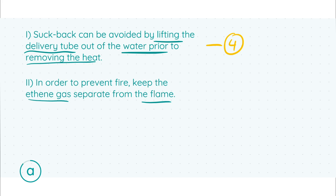For Part ii — avoiding fire — the answer is to keep the ethane gas separate from the flame, since ethane is quite flammable. There was a total of four marks for each part. Other acceptable answers include loosening the stopper, not turning off the Bunsen while the tube is in water, avoiding gas leaks by ensuring all stoppers are tightly sealed, or closing the ethanol container after setup.